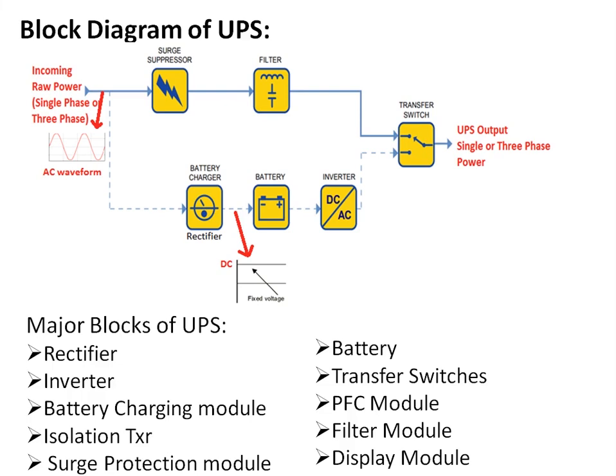Additional UPS blocks include battery transfer switches; a Power Factor Correction (PFC) module — because the rectifier and inverter use high-speed IGBTs and MOSFETs, which can affect the incoming power factor, so a PFC module is used to correct it; a filtering module for providing clean power free of any transients; and a display module for providing the status of the UPS.